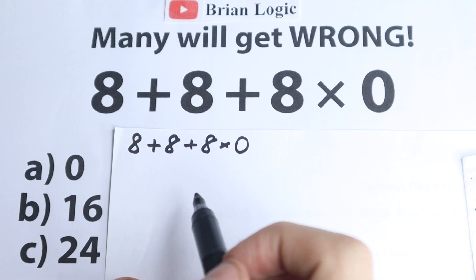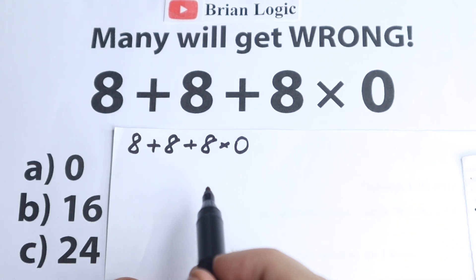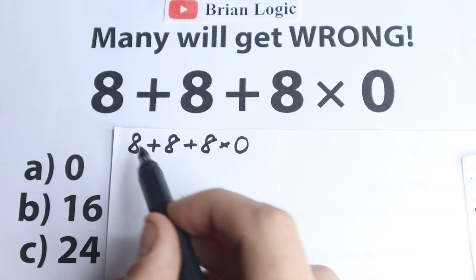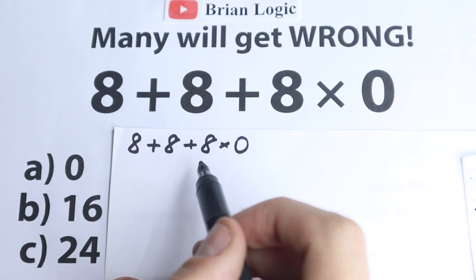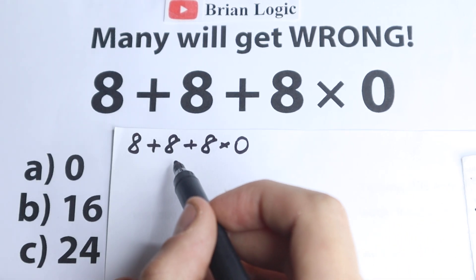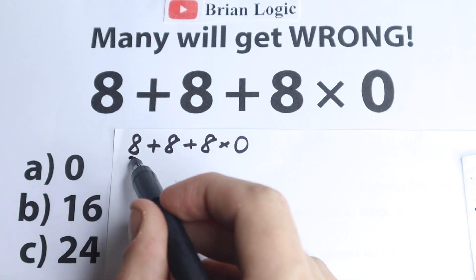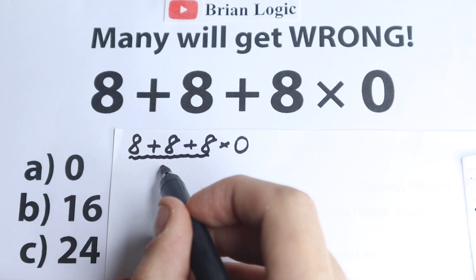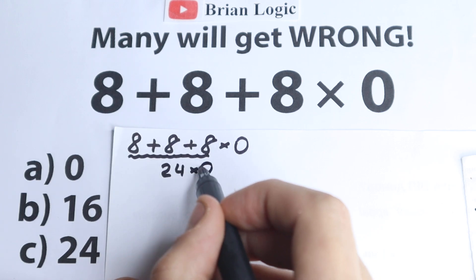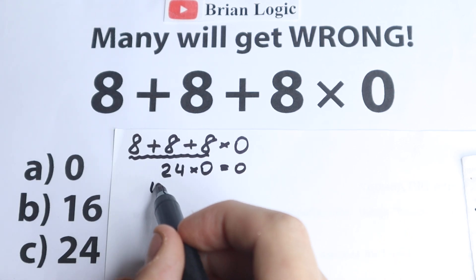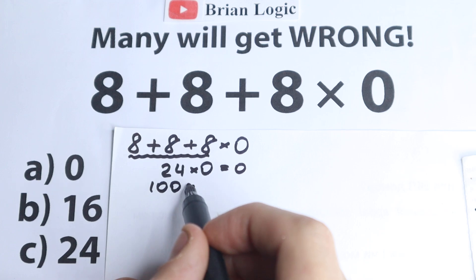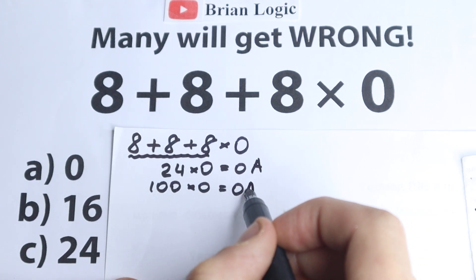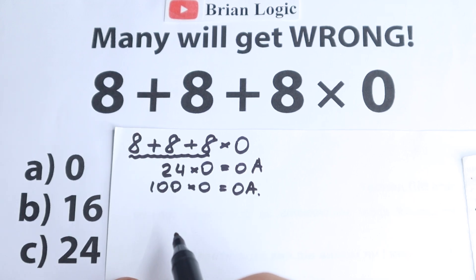One part of students solve this question like that. From school they know that whatever number you have on the left-hand side, if you multiply by 0, all the time you have 0. So if we add it, we have 8 plus 8 plus 8, which is 24 times 0, and we get 0. Even 100 times 0 gives 0. This is option A, and some students think this is the correct solution.